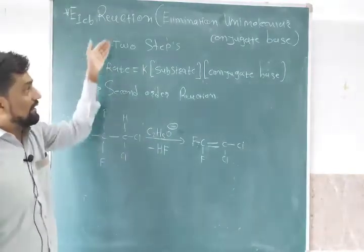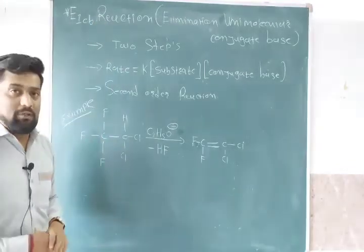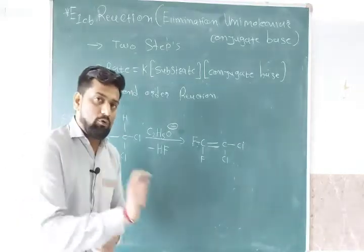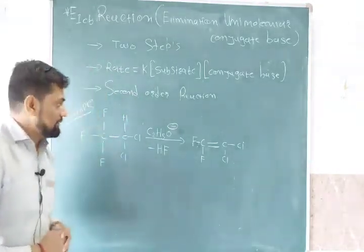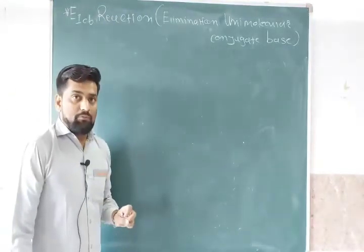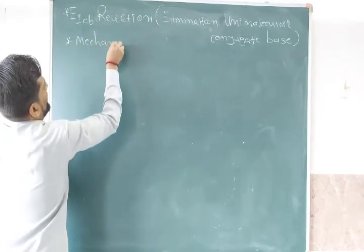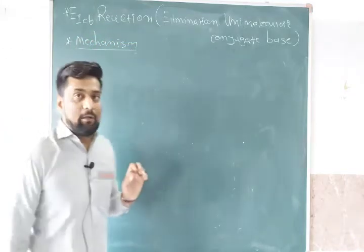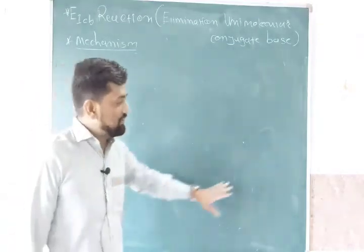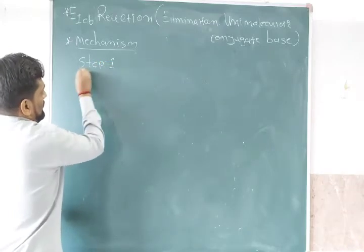So here are the three points which are quite important for the E1CB reaction, and this is the example for the E1CB reaction. E1CB reaction is known as Elimination Unimolecular Conjugate Base. Next we will discuss the mechanism for the E1CB reaction — how it will be formed.